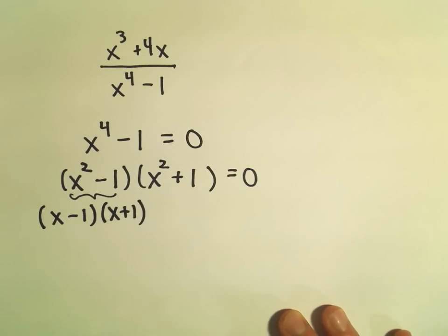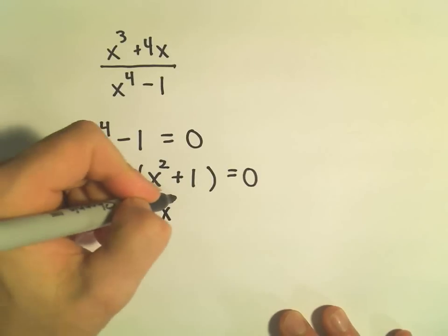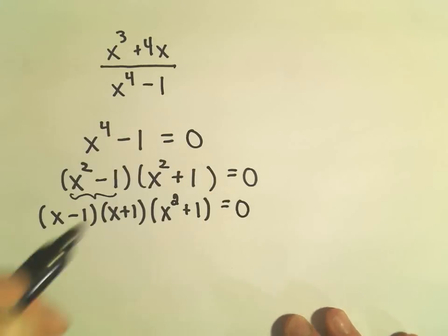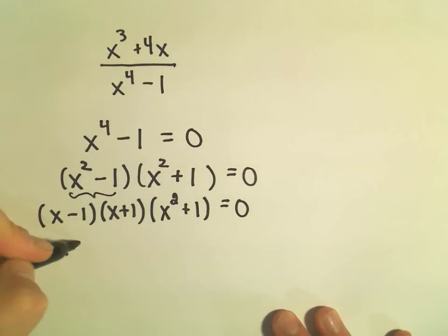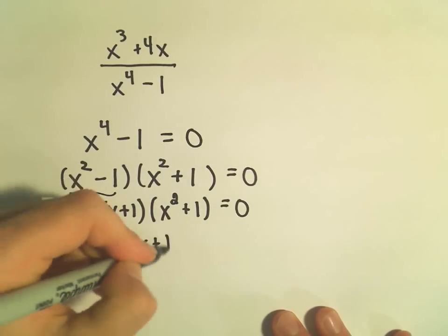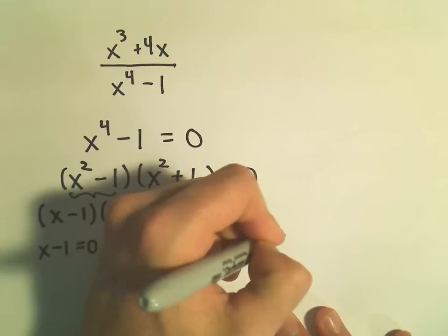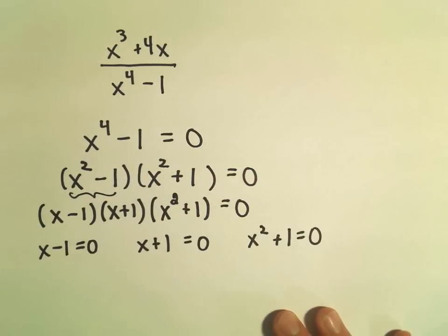And again, now I set each part equal to zero, each factor. So I set x - 1 equal to zero. I'm going to set x + 1 equal to zero. I'm going to set x² + 1 equal to zero.